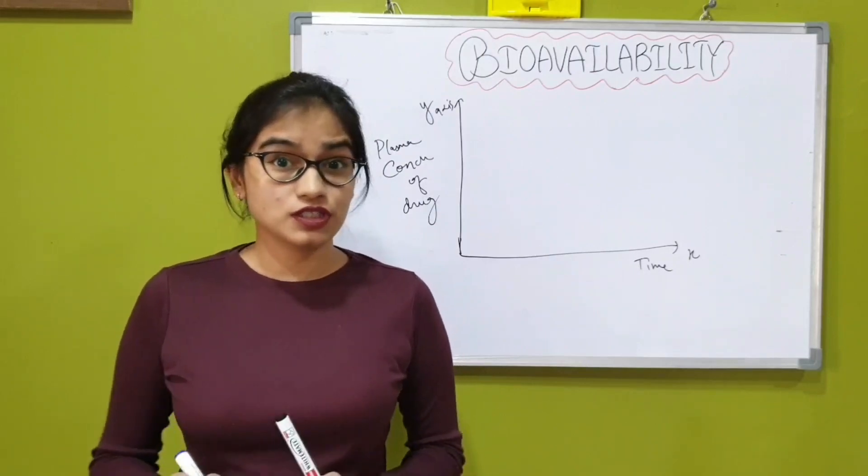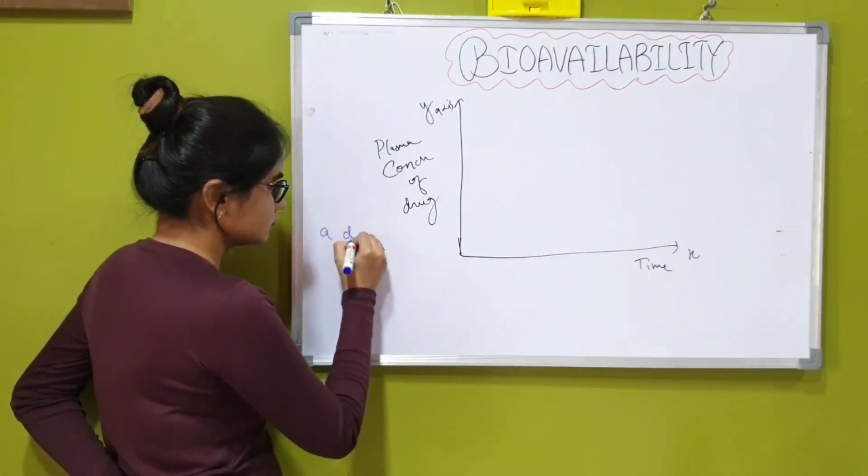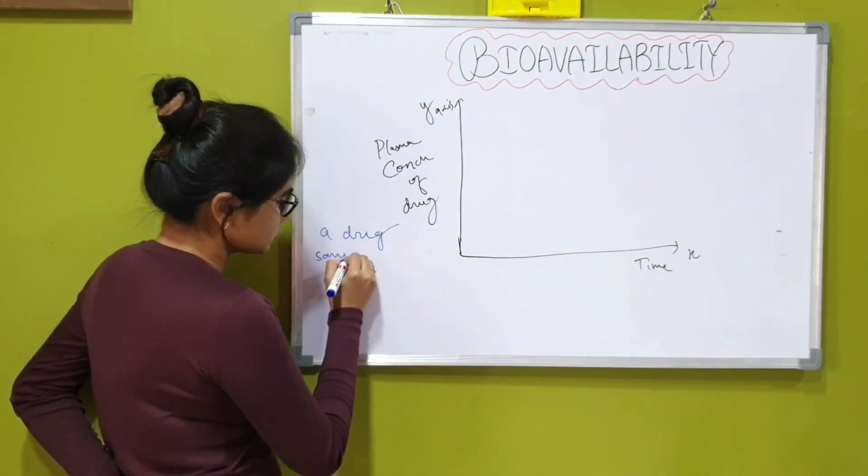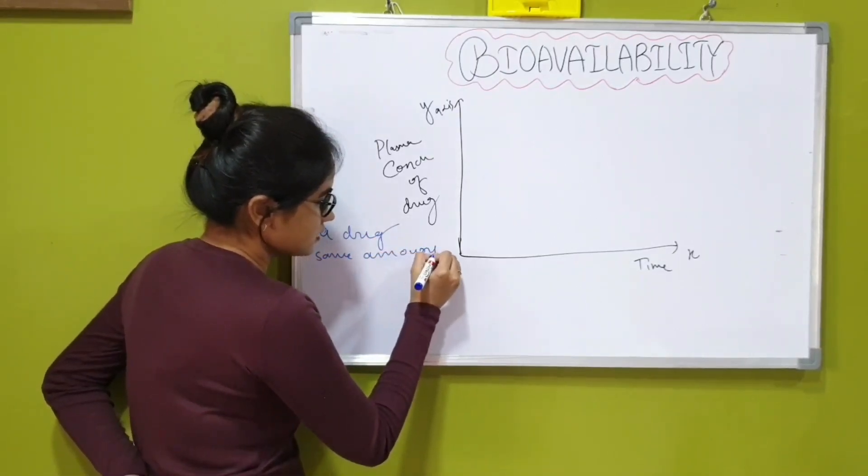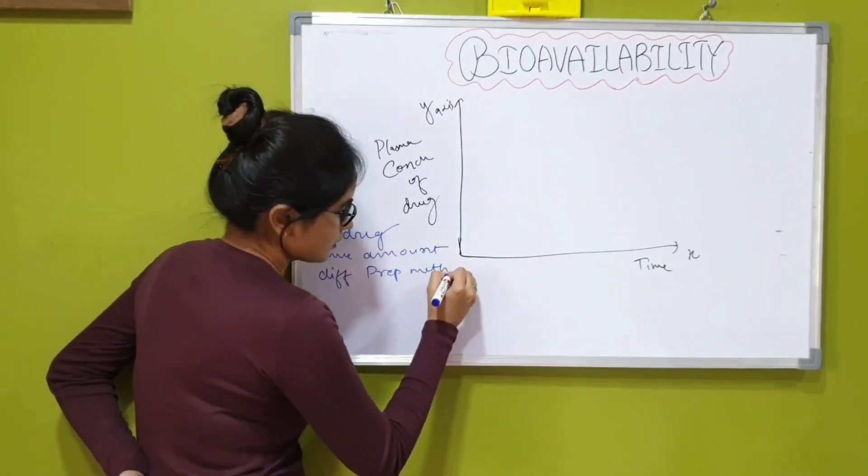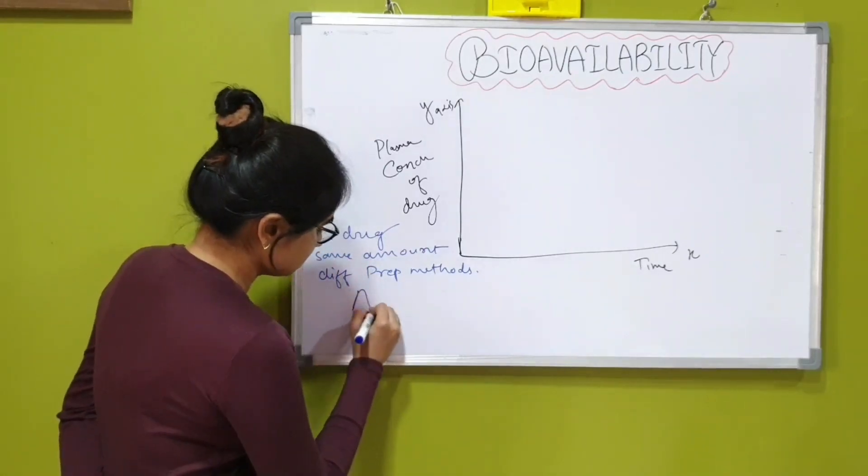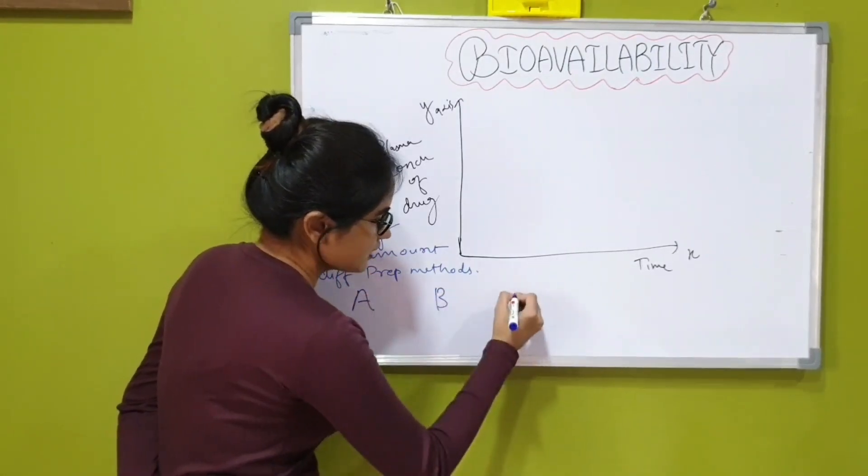Next, we have taken three preparations of a drug. We have taken a drug in same amount but different preparation methods. So we obtained three preparations of the same drug: A, B, and C.